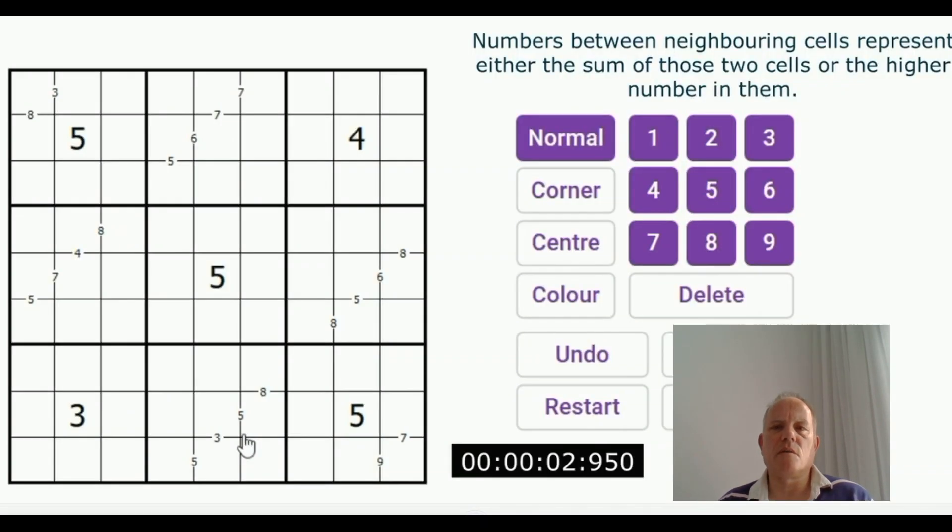This one is called Sum or X and the extra rule here, you can see there is a number of small digits each between two cells. The rule is that numbers between neighboring cells represent either the sum of those two cells or the higher number in them. This sort of either-or constraint, I've never seen this sort of puzzle before so it's quite difficult to work with.